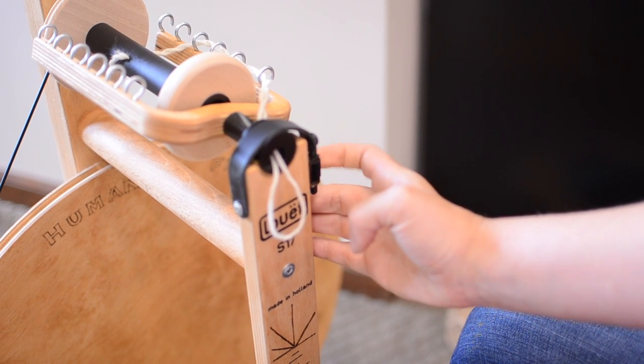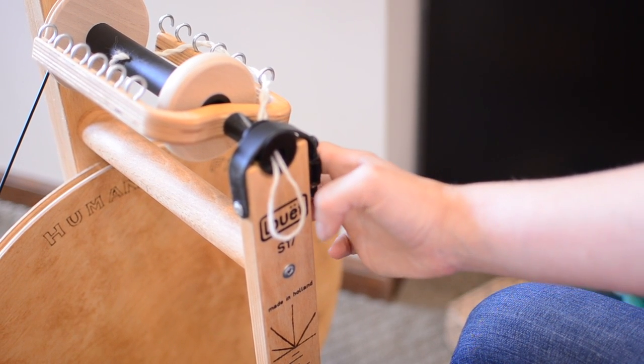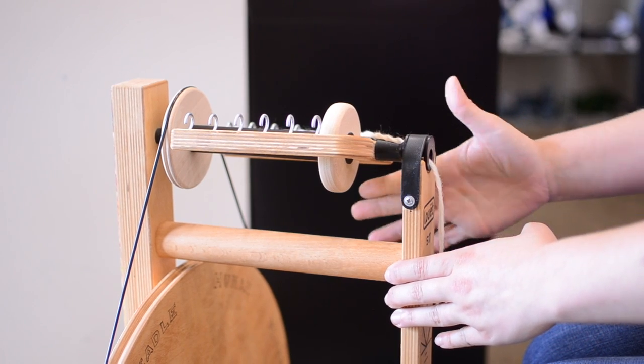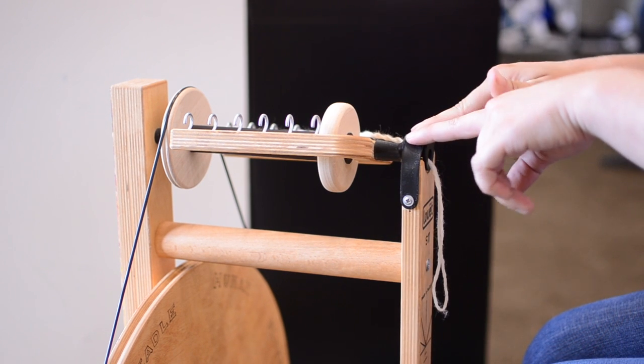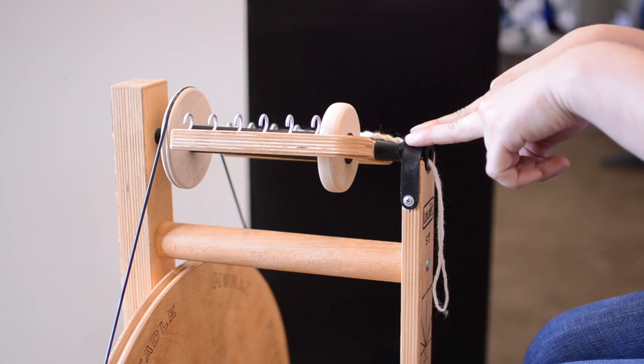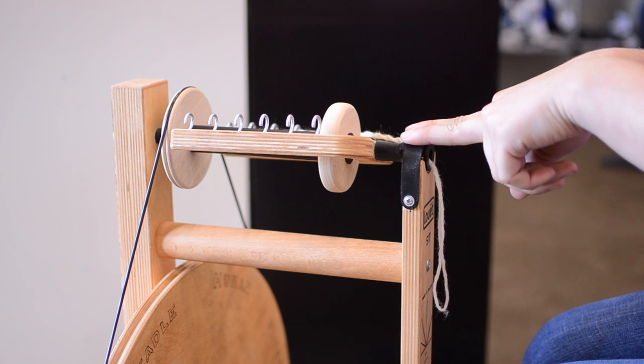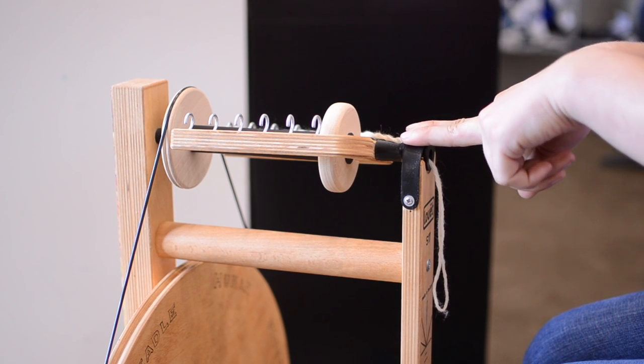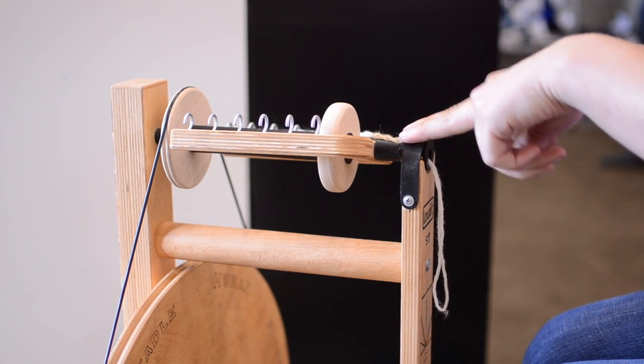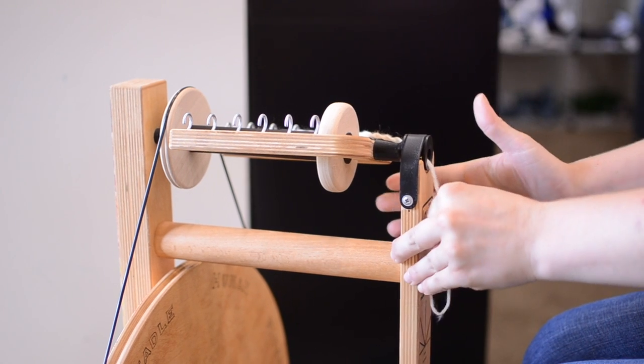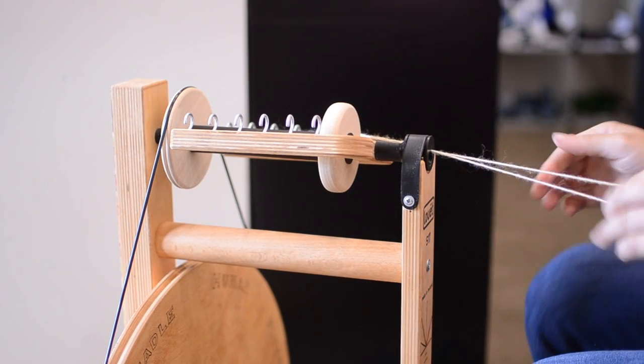So the further down you move it, the tighter the tension, because there's a lot of friction on the flyer. The flyer's going to want to stop sooner. This is going to have very strong take up when you tighten your tension all the way down.